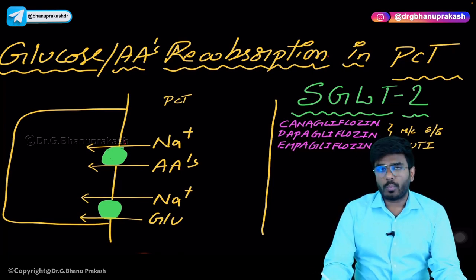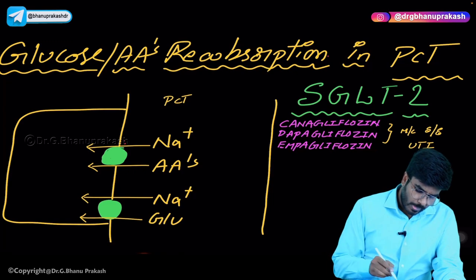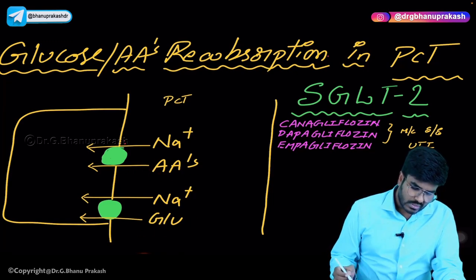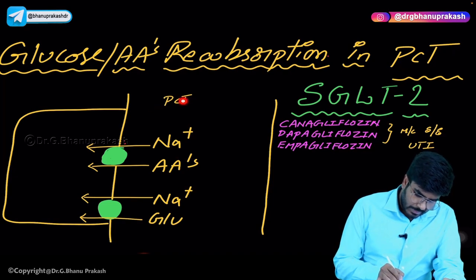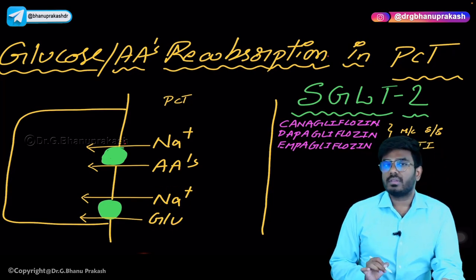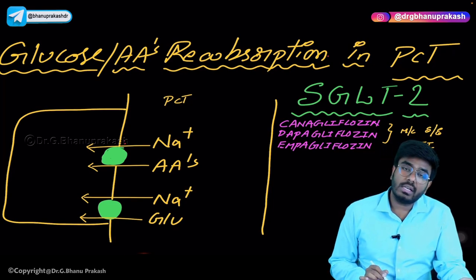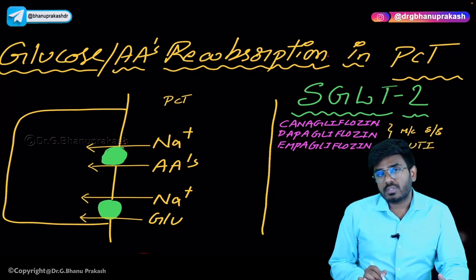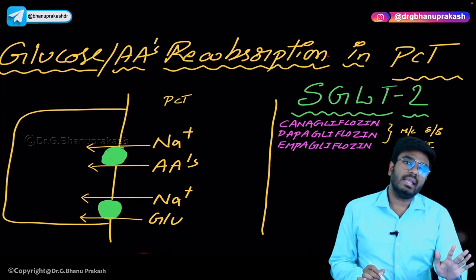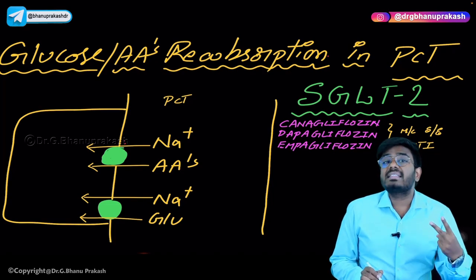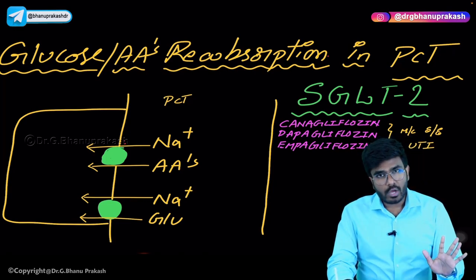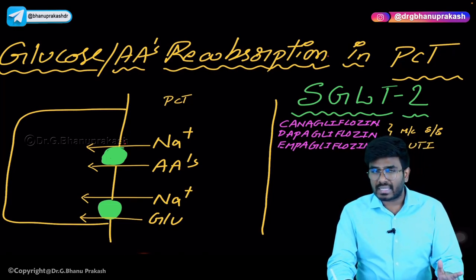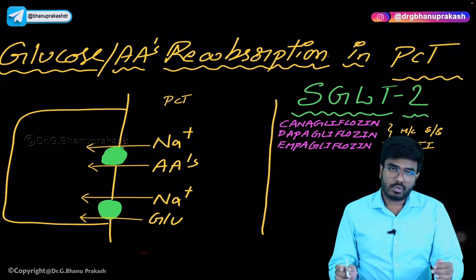Now let's discuss how glucose and amino acids are reabsorbed in the PCT. 100% of both are reabsorbed, but this requires sodium. Amino acids are co-transported with sodium via the sodium-amino acid co-transporter, and glucose is co-transported with sodium via the sodium-glucose co-transporter. This type of transport is secondary active transport. Remember: all co-transporters are examples of secondary active transport — ATP is used indirectly.